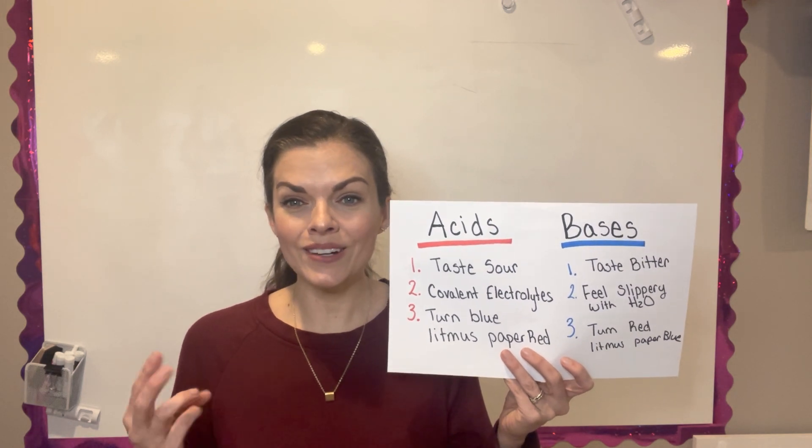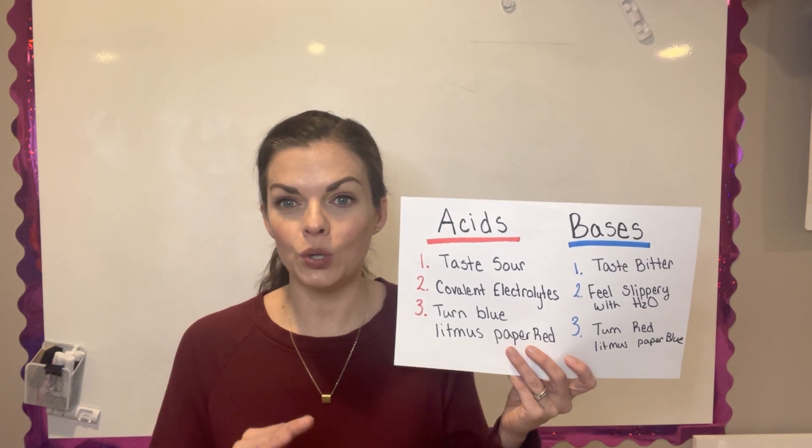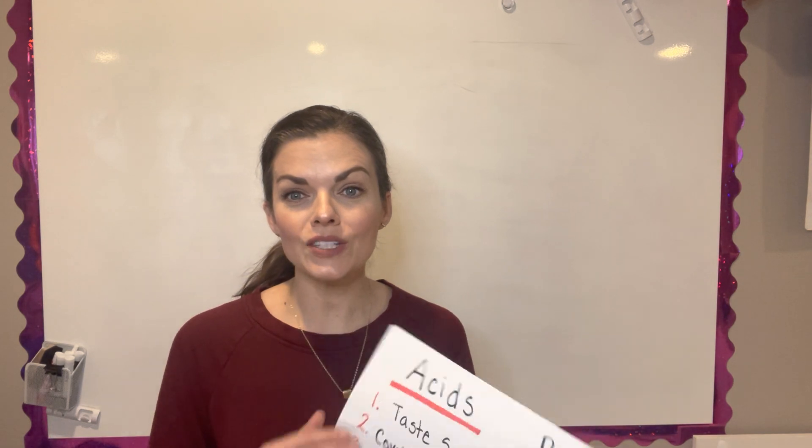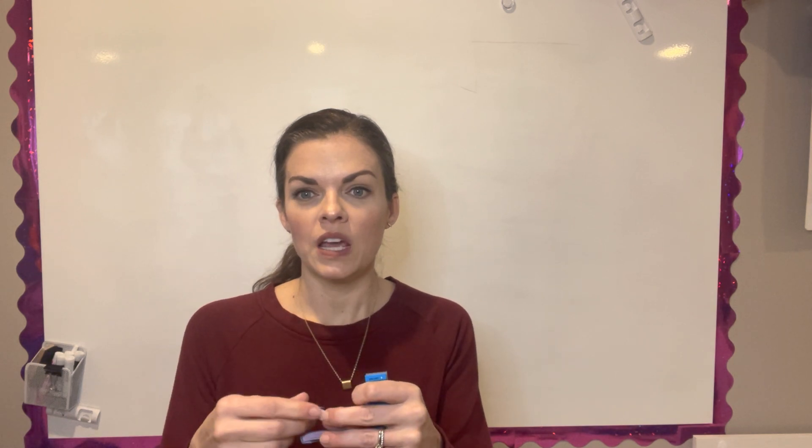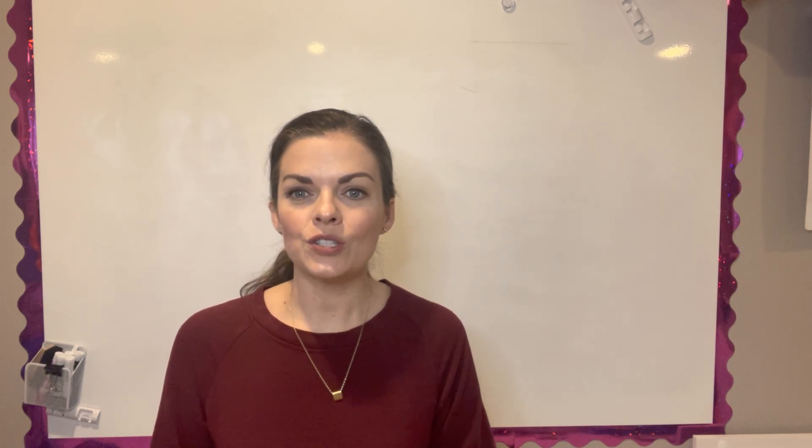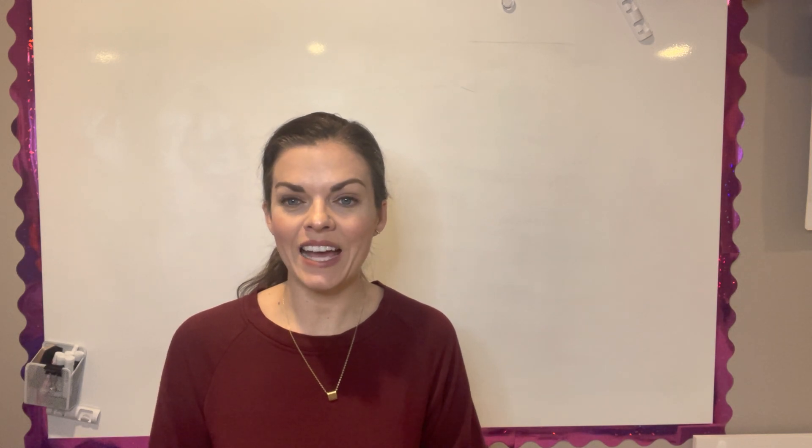The third thing about an acid that you're going to learn is that it turns blue litmus paper red. In class, your teacher will probably have these little things of litmus paper. You open it up and inside it has these teeny tiny little pieces or strips of paper that are a light blue color and you dip them into an acid. The paper will actually turn to a pink. That is a quick way of testing if your compound is an acid or base.